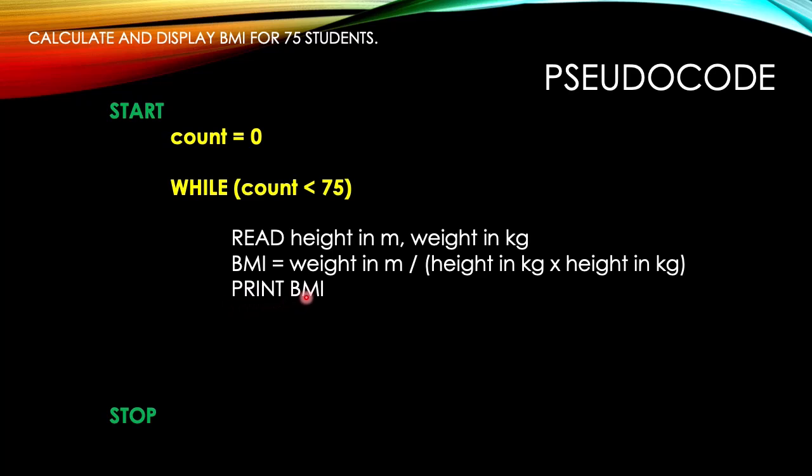Next we have to print the BMI inside the loop, which means we are going to print the BMI for 75 times because we are going to display the BMI for 75 students.